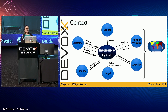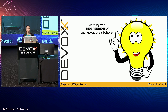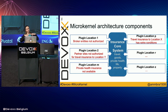This means the insurance business domain has essentially the same business rules. However, based on location, it varies, and each location has certain particularities that need to be implemented. The building blocks of the insurance system can be thought of as a system that supports adding or upgrading its geographical behavior independently.